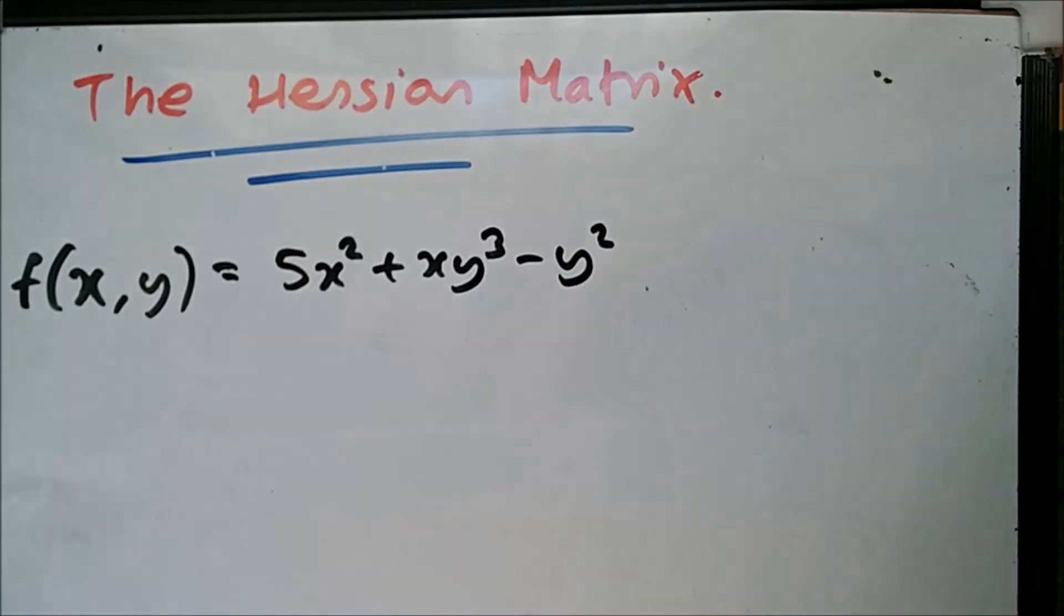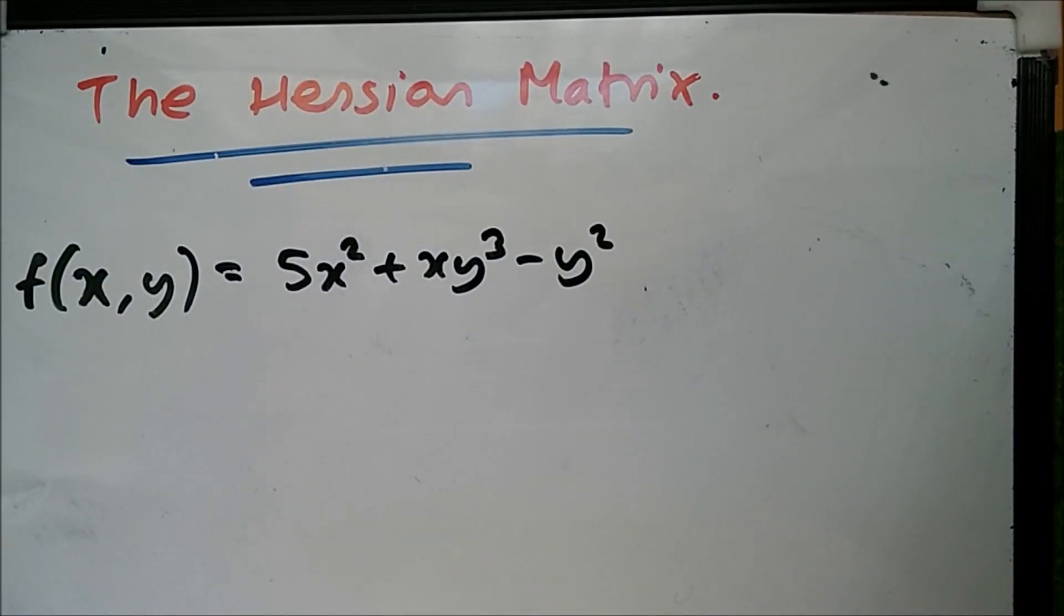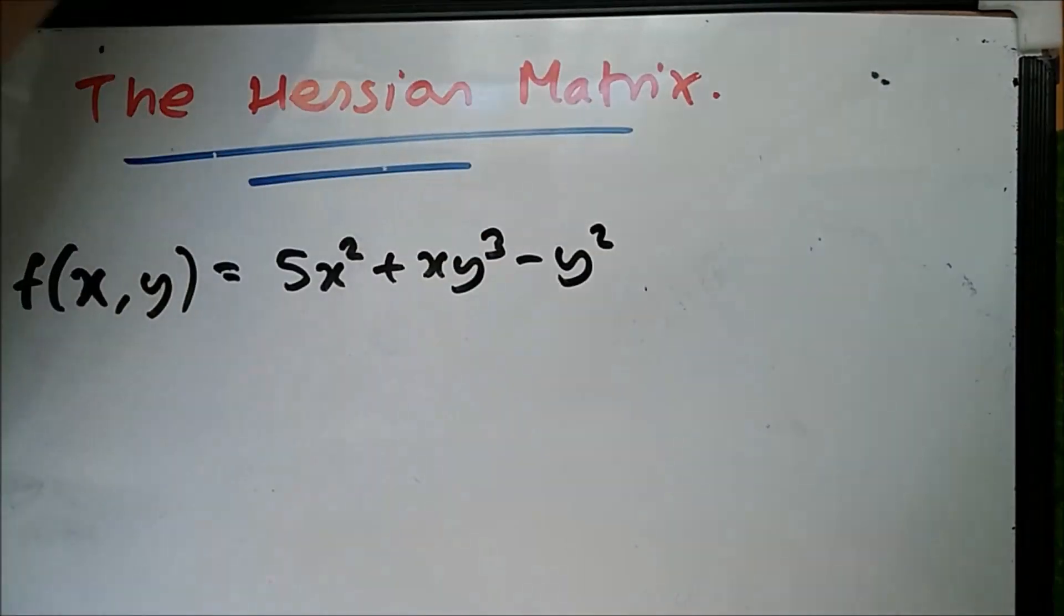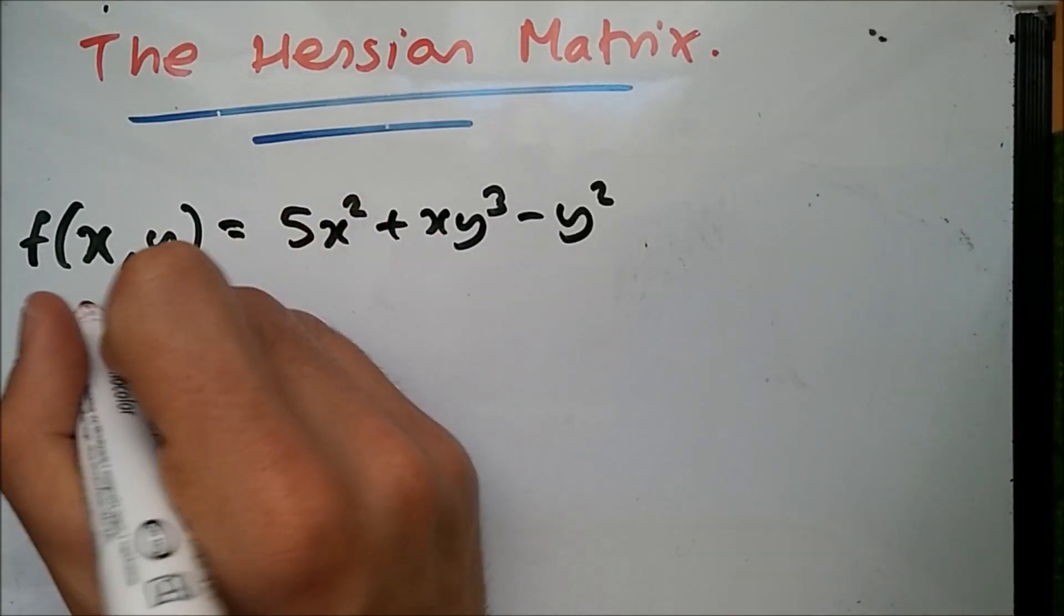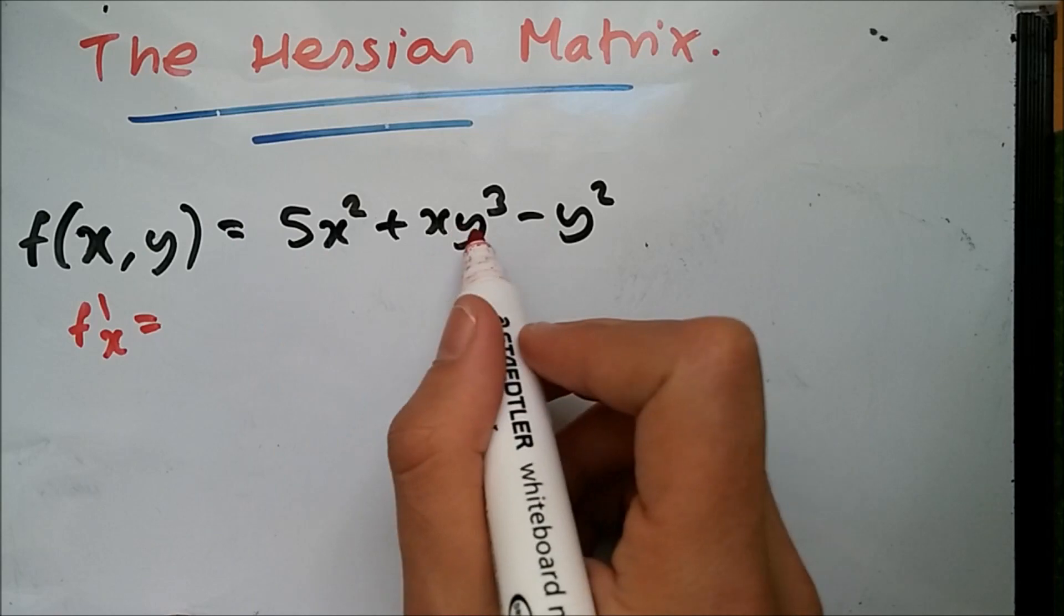Now we need to differentiate this twice. We need fxx, fxy, and fyy. First we calculate the first partial derivatives. Differentiating with respect to x, we treat everything as constant except x, so we get 10x plus y³.